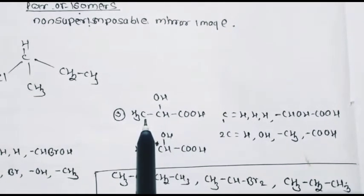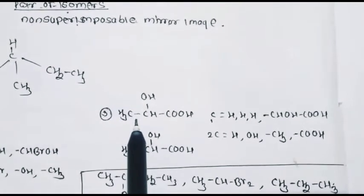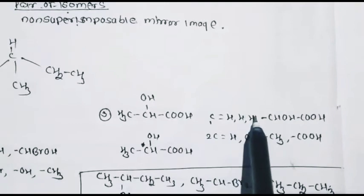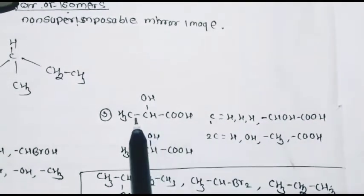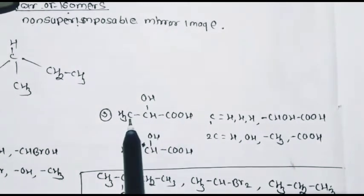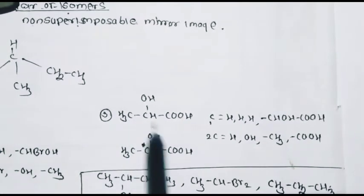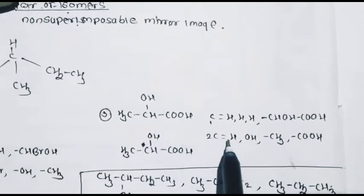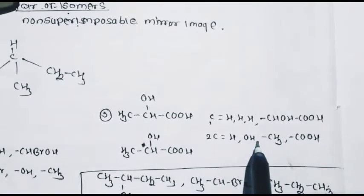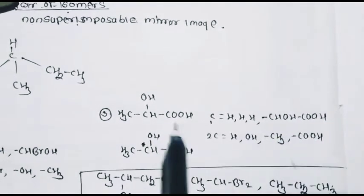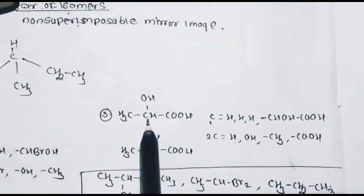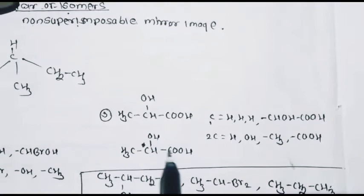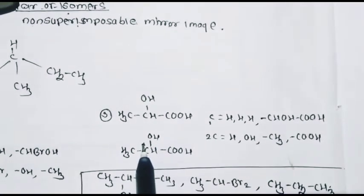Another example: CH3CHOHCOOH — this is lactic acid. Carbon 1 is attached to 3 similar hydrogen atoms and the group CHOHCOOH — not chiral. Carbon 2 is attached to hydrogen, OH, CH3, and COOH — four different groups. Therefore, in lactic acid, carbon number 2 is a chiral carbon, also called asymmetrical carbon atom, denoted by the asterisk symbol.